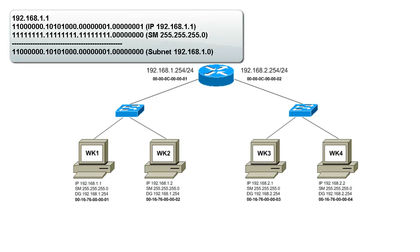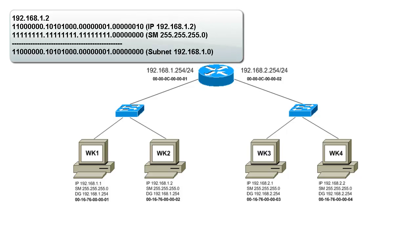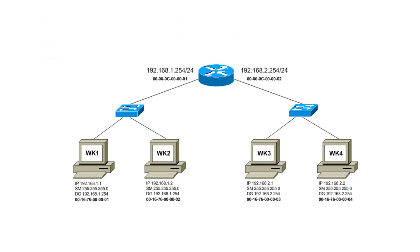First, Workstation 1 determines what subnet it's on by applying its subnet mask against its own IP address. The result is that Workstation 1 is on the 192.168.1 network. When it applies Workstation 2's IP address against the subnet mask, it determines that Workstation 2 is also on the same subnet. Since Workstation 2 is on the same subnet, Workstation 1 has no need to send the packet to the default gateway.